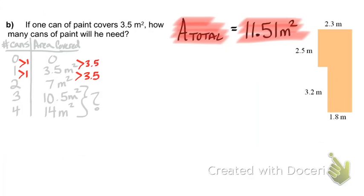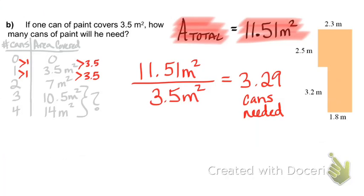If we have a total area of 11.51 meters squared, and we divide that by how much area each can of paint will cover, what we'll get is how many cans of paint we're going to need exactly. After dividing we can see we need just over three cans of paint, which means we will have to purchase a full four cans of paint.